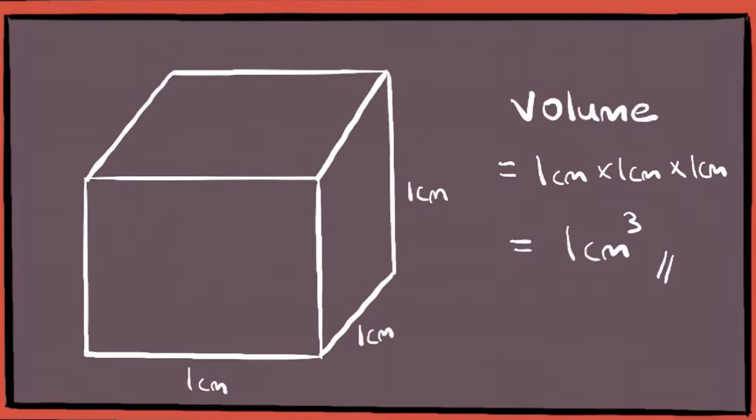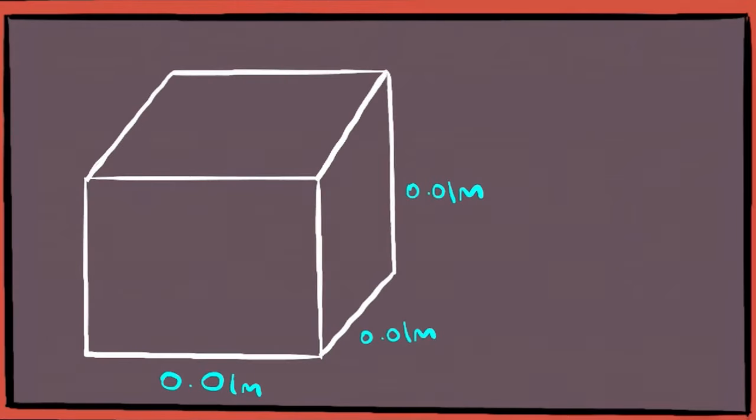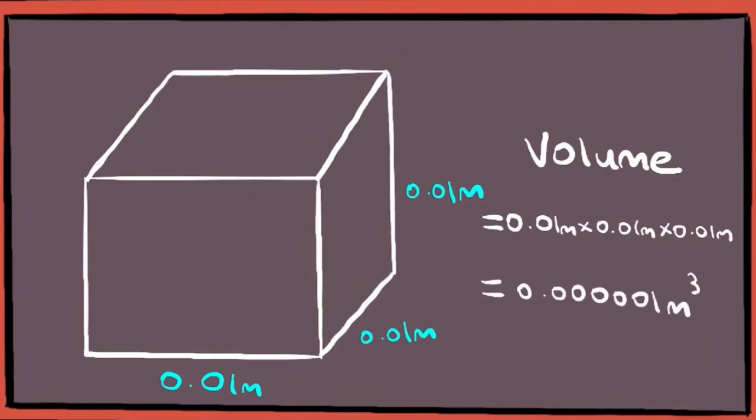Now let's rewrite the size into meters. As 1 cm equals 0.01 meters, each side of the cube is 0.01 meters in length. So the volume of the cube is 0.01 times 0.01 times 0.01, which equals 0.00001 m³ with five zeros after the decimal point.